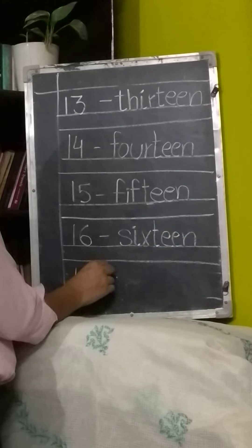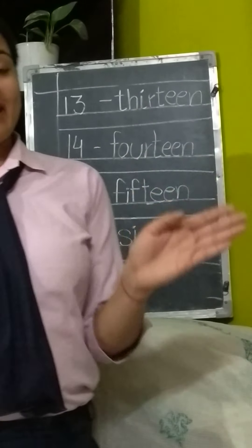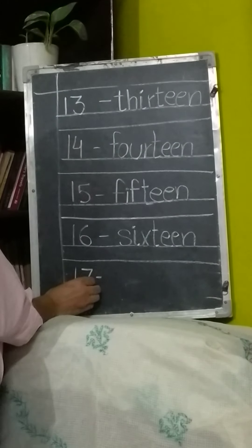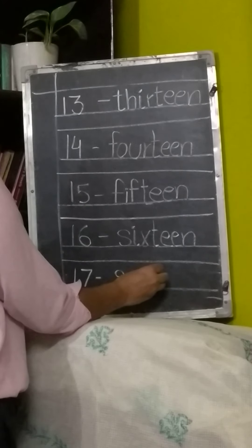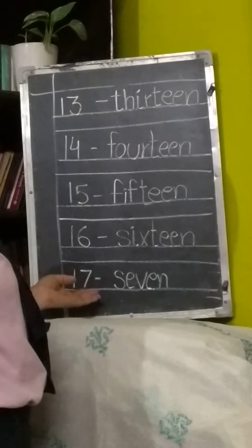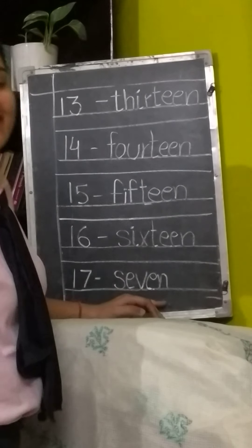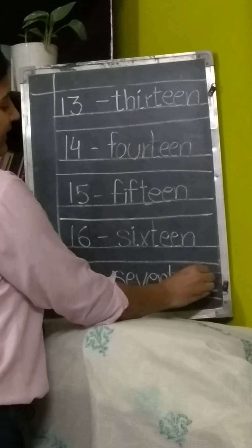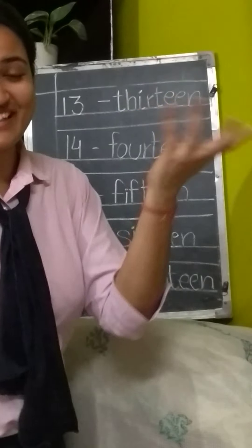Next number is 17. 17 is also very simple. You write 7, then teen. You know the spelling of 7: S-E-V-E-N. Then T-E-E-N for teen. So 17 is S-E-V-E-N-T-E-E-N. I have written S-E-V-E-N here. So what is left? T-E-E-N. Say 'teen': T, double E, N — teen. And teen gives us 17.